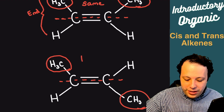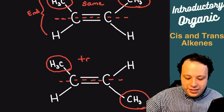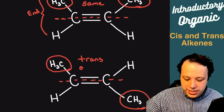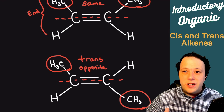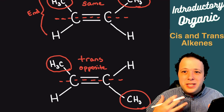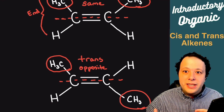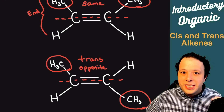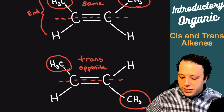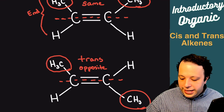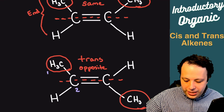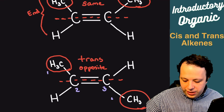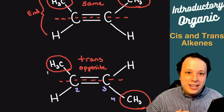Whenever they're opposite, this is referred to as trans. When it comes to naming these different structures, we still follow the same normal naming conventions — we name the longest chain just like we would for any alkene — however, we need to make sure we include cis or trans in the name.